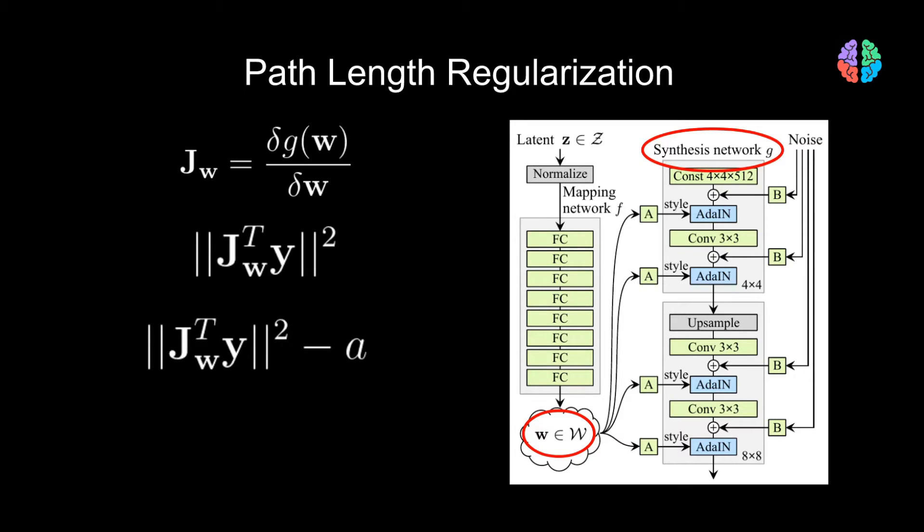If we also want the network to contribute to this term, we introduce a learnable parameter A into this equation. Finally, we compute the mean of all the outputs to arrive at the path length regularization.